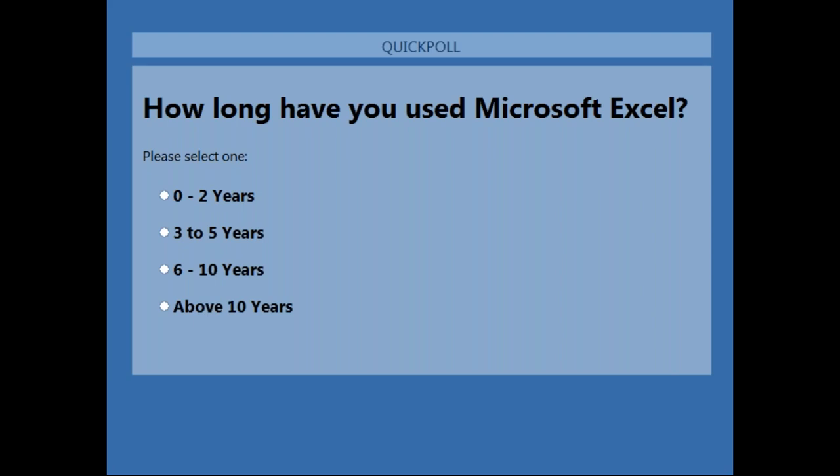Note that you cannot directly use treemaps with a pivot table. You need your data in an Excel range — not a pivot table — to use treemaps. However, you can use formulas like GETPIVOTDATA to extract data from your pivot table into a regular range, and then apply your treemap from there.